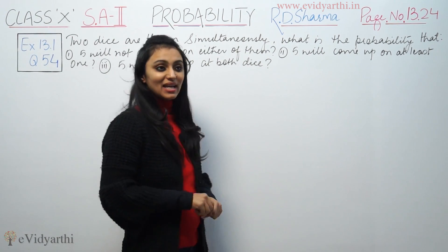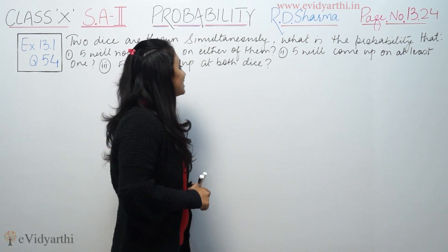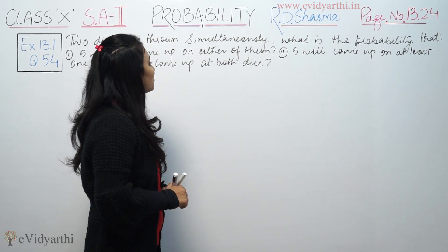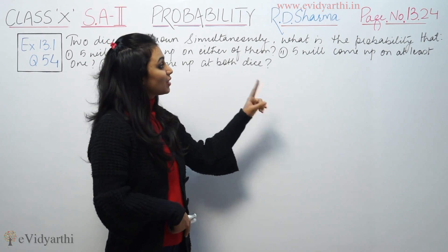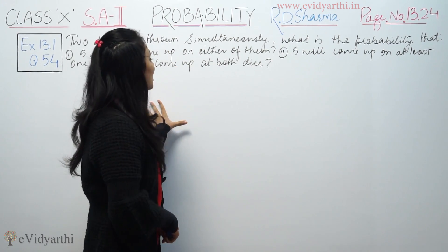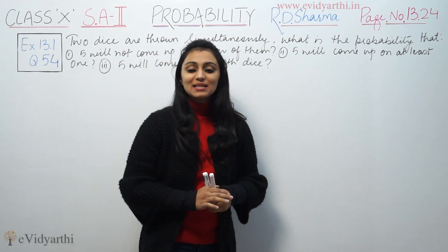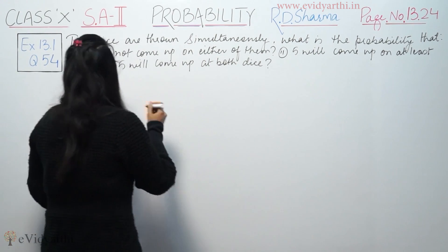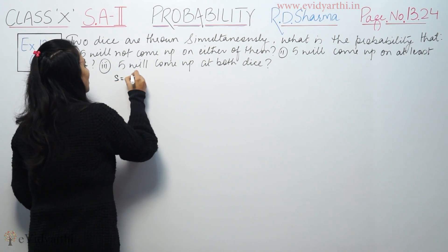Two dice are thrown simultaneously. Find the probability that 5 will come up on either of them, 5 will come up at least one of them, 5 will come up at both dice. First we will make the sample space. We will throw 2 dice. What is the sample space?